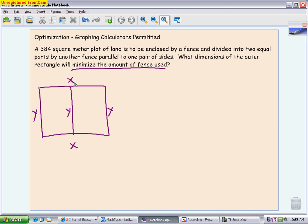and then I'm going to call these pieces X. You could use different letters, whatever is comfortable for you. I want to look at my primary and secondary equation. My primary equation is the one I'm trying to optimize. In this case, I'm optimizing the amount of fence, the perimeter. We have two X pieces and three Y pieces, so P = 2X + 3Y.